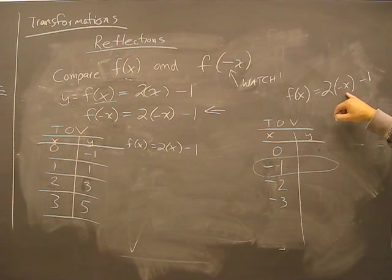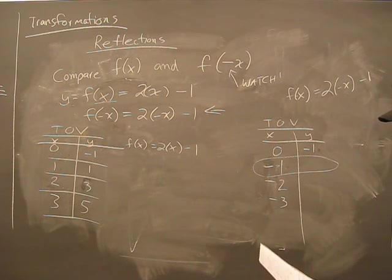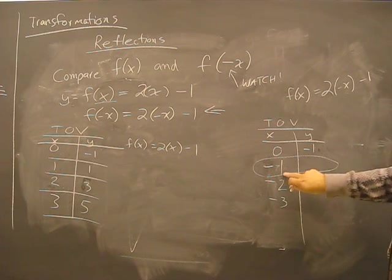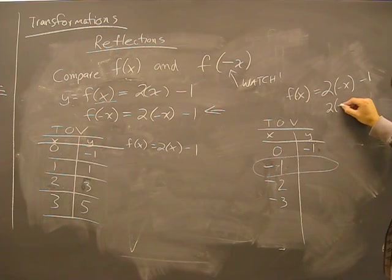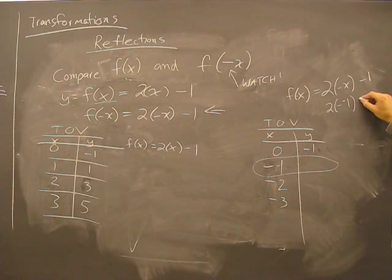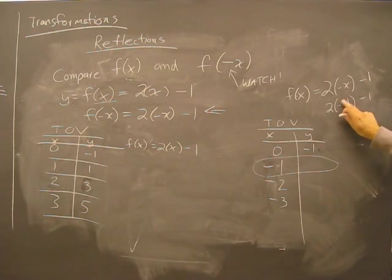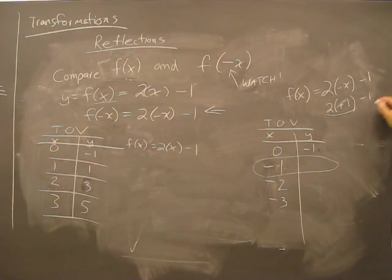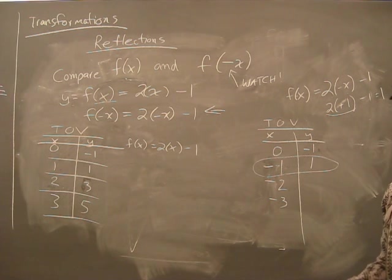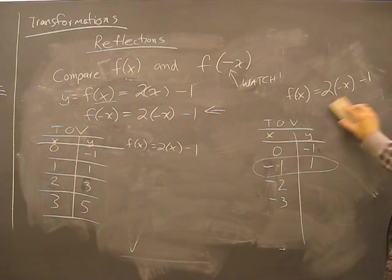Alright. We put in zero, this is going to be negative one. Am I right? Yes. We put in a negative one, this becomes a positive. Two minus one, we get a positive one. Does that work out with my calculations? Yes, it does. Thank goodness.